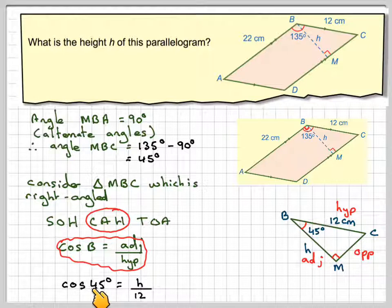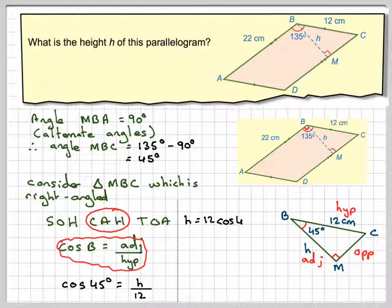Therefore, cos of 45 is equal to the adjacent side, which is h divided by 12. And then the opposite of dividing by 12 is to multiply by 12. So h will be 12 cos 45 degrees.